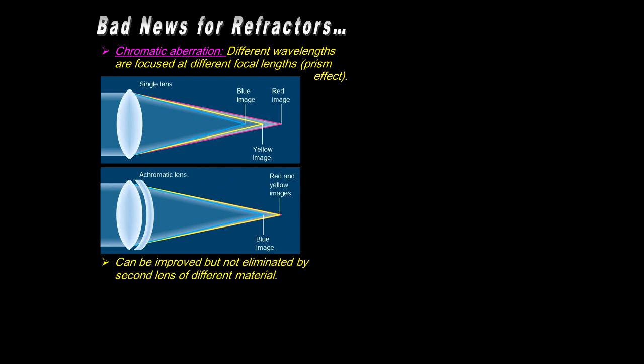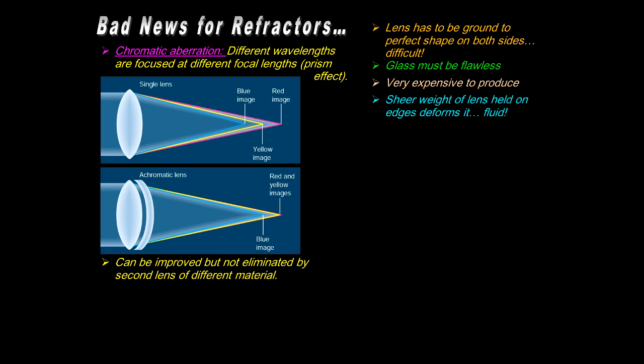One way to partially overcome it is with a secondary lens. It brings it together in part with this achromatic lens, but it doesn't do the whole job. It just helps, so there's still a problem. Moreover, lenses have to be ground perfectly on both sides. It's very difficult from a technological engineering standpoint. The glass itself must be flawless. It's very expensive to produce that kind of glass.